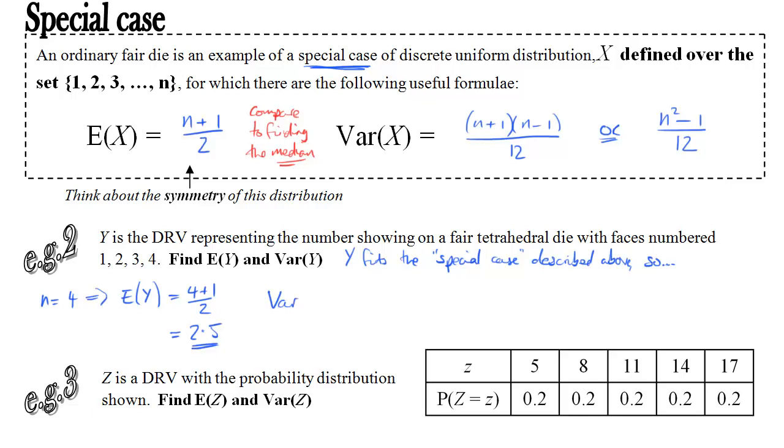And for the variance of y, we can use the simpler form, n squared minus 1 over 12. So 4 squared minus 1 is 15, divided by 12 is 1.25. And it's as simple as that.